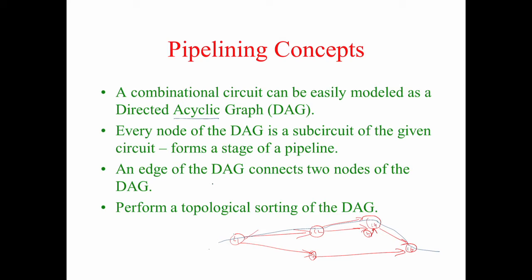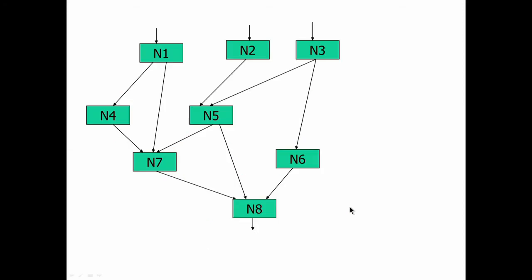Every node of this directed acyclic graph is a sub-circuit of the given circuit — it can be an AND gate, OR gate, multiplier, adder, or any standard cell. These nodes could form a stage of a pipeline. An edge of the DAG connects two nodes. We first perform a topological sorting of the DAG.